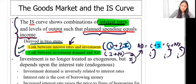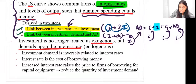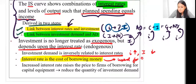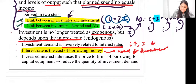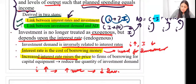Investment is no longer treated as exogenous — it's not determined outside the model but depends on the interest rate. Investment is inversely related to the interest rate: as interest rate increases, investment decreases. This is because the interest rate is the cost of borrowing money used for investment. Higher interest rates raise the price of borrowing capital for firms, thereby reducing the quantity of investment demand.